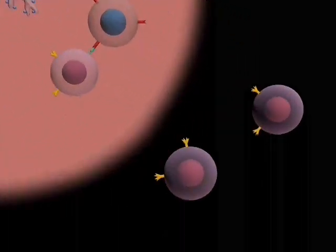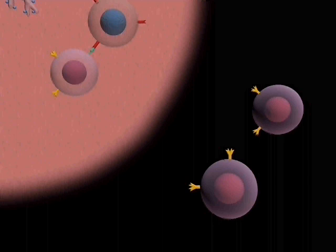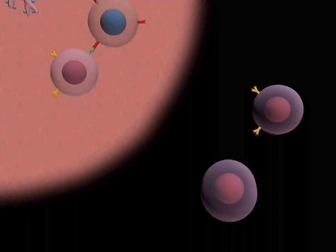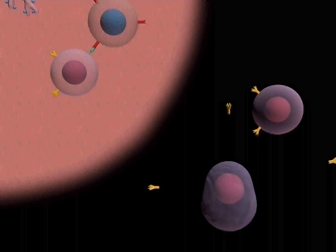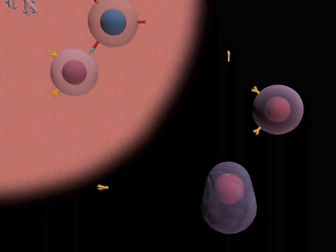B cells leaving the germinal center may become antibody-secreting plasma cells or memory cells. As a consequence of these processes, the affinity of the antibodies tends to increase during an immune response, and this is associated with a switch to production of IgG, IgA, and IgE.